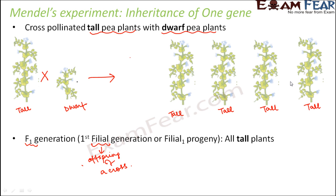Now, how do we denote the characteristics of these plants? Any gene or trait is denoted by two letters. A tall purebred plant will have both alleles tall, denoted by capital T, capital T. The dwarf plant is denoted by small t, small t. We will see a little later what exactly is contained in the alleles of the F1 plants. But the result was that in the first generation, all the plants were tall.